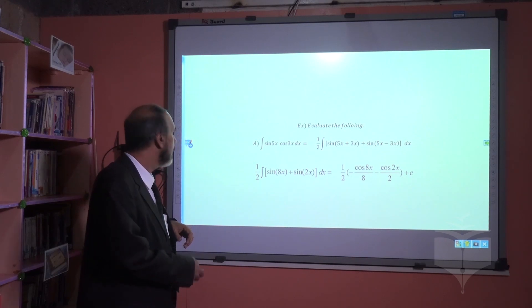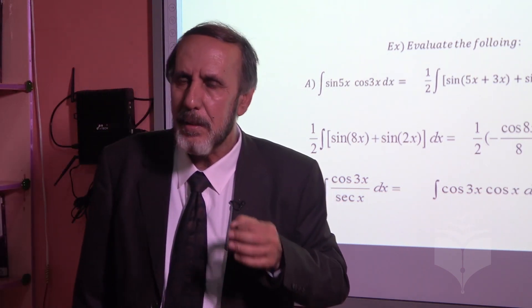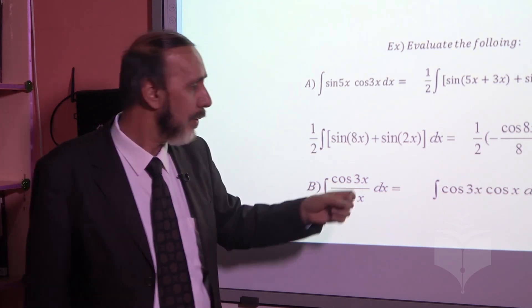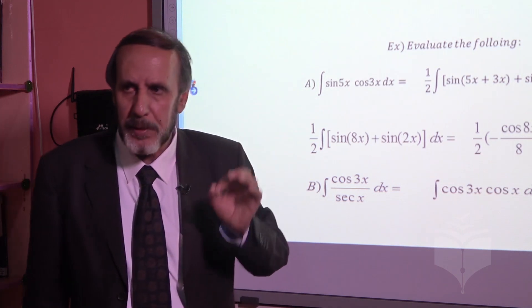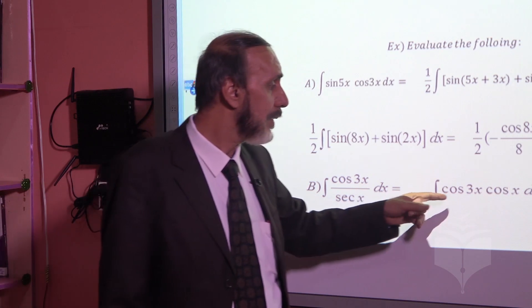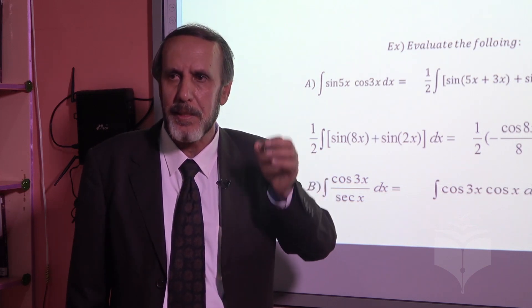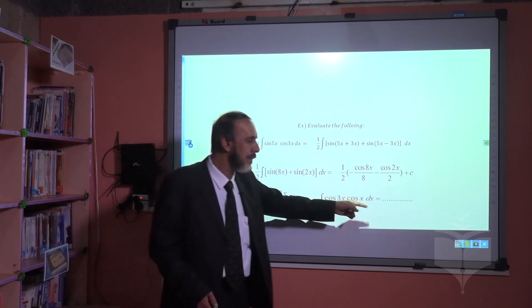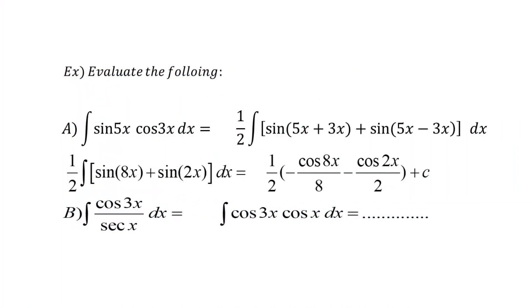This is cosine(3x) times secant. We change secant to 1 over cosine. Upside down, it becomes multiplication: cosine(3x) times cosine(x). Now if we have multiplication, we change multiplication to addition or subtraction using the cosine-cosine product-to-sum formula.